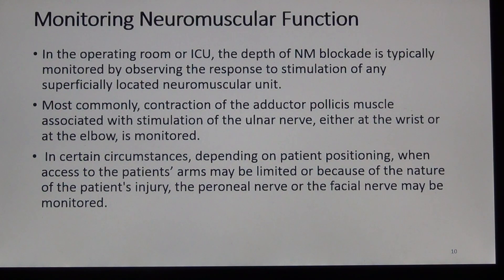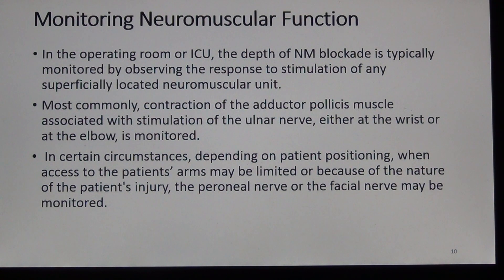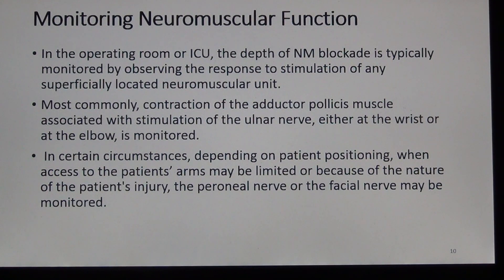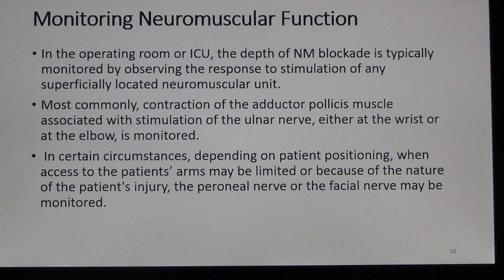In the operating room or ICU, the depth of neuromuscular blockade is typically monitored by observing the response to stimulation of a superficially located neuromuscular unit. Most commonly, we monitor contraction of the adductor pollicis muscle associated with stimulation of the ulnar nerve at the wrist or elbow. Depending on patient positioning or injury, the peroneal nerve or facial nerve may also be monitored.